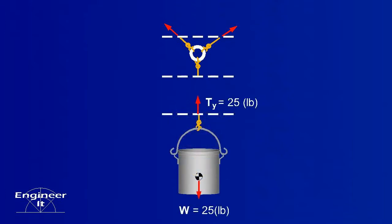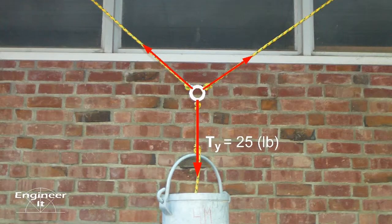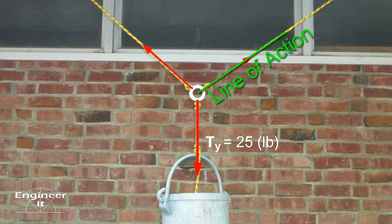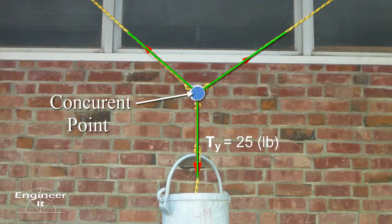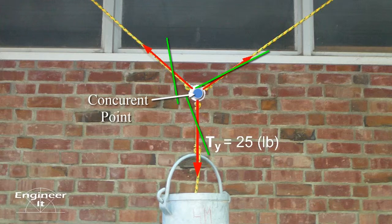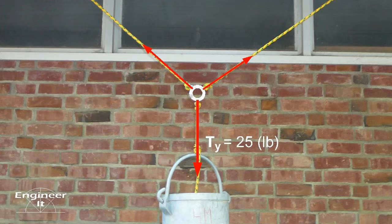The force Ty from the first free body diagram is flipped when applied to the rope connected to the ring. This makes sense when looking at the ropes tied to the ring. All three ropes pull along their line of action. The intersection of these lines locates the concurrent point for the three forces.